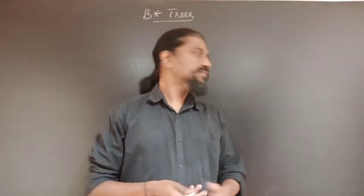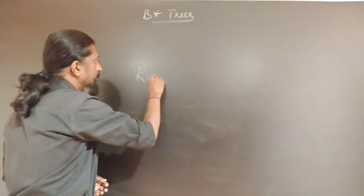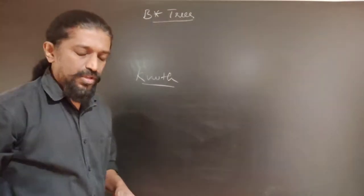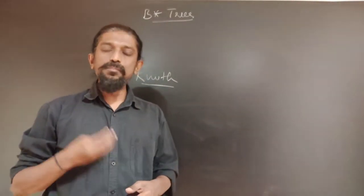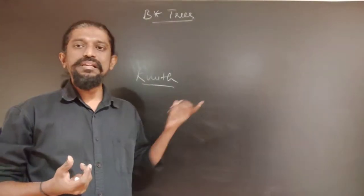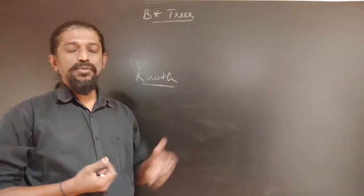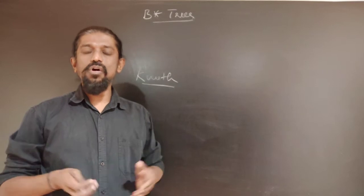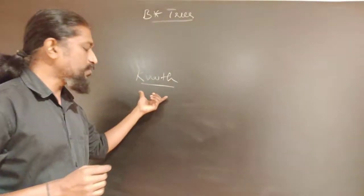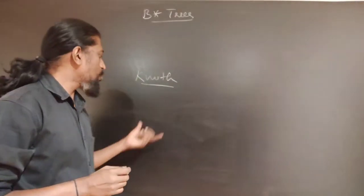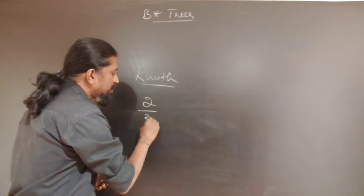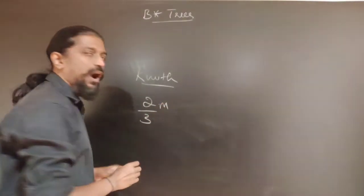Influenced by this, Knuth proposed what are called B-star trees. Knuth improved the minimum number of descendants that a B-tree can have, and thereby came across what is called a B-star tree. All other properties of B-trees and B-star trees are the same, except for one property: Knuth requires that a node of a B-star tree be two-thirds full instead of half full.